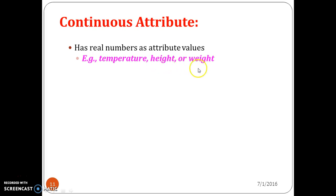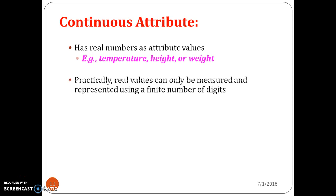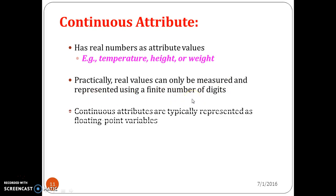You can also consider customer IDs as an example. In practice, real values can only be measured and represented using a finite number of digits. Continuous attributes are typically represented as floating-point variables.